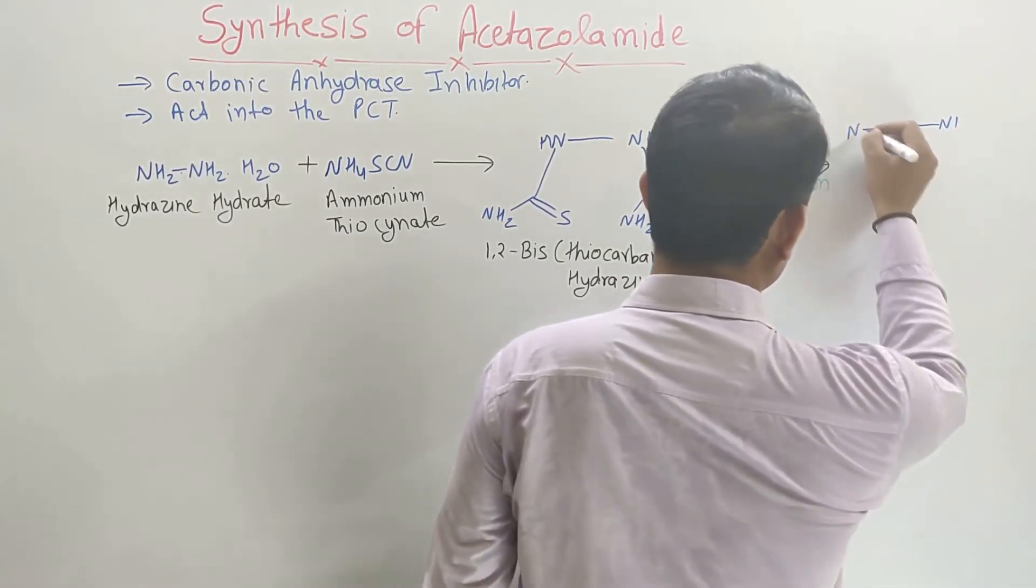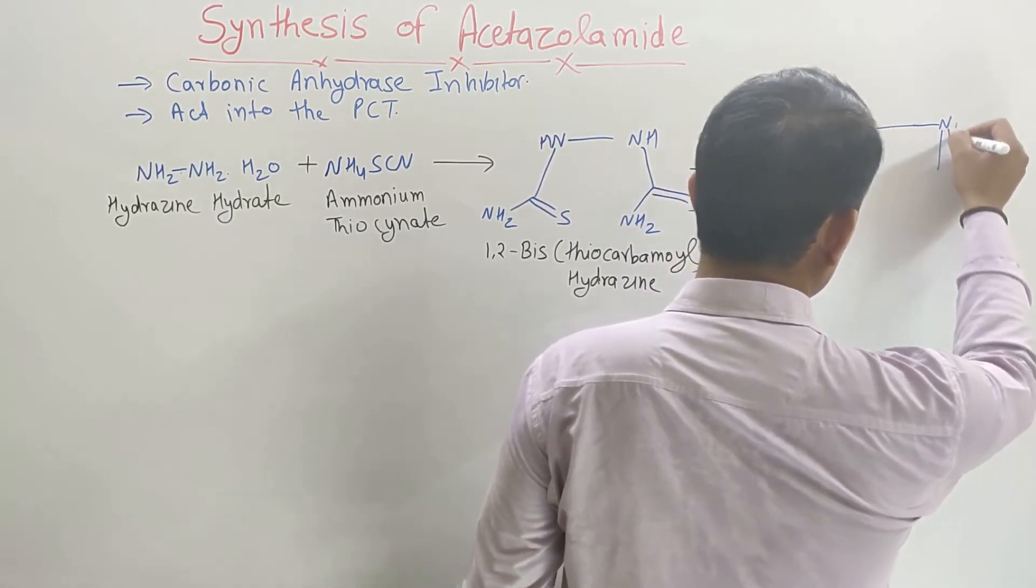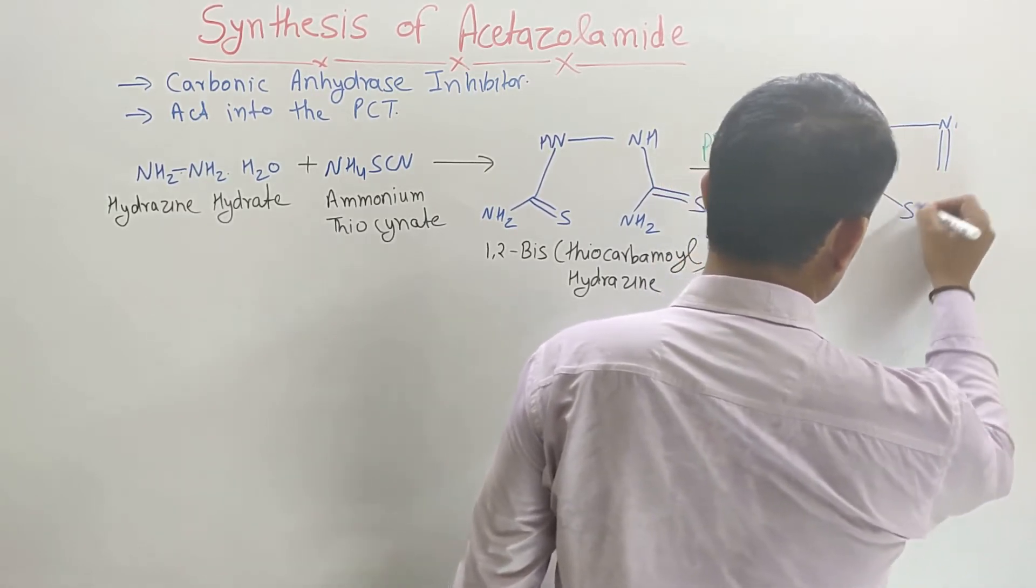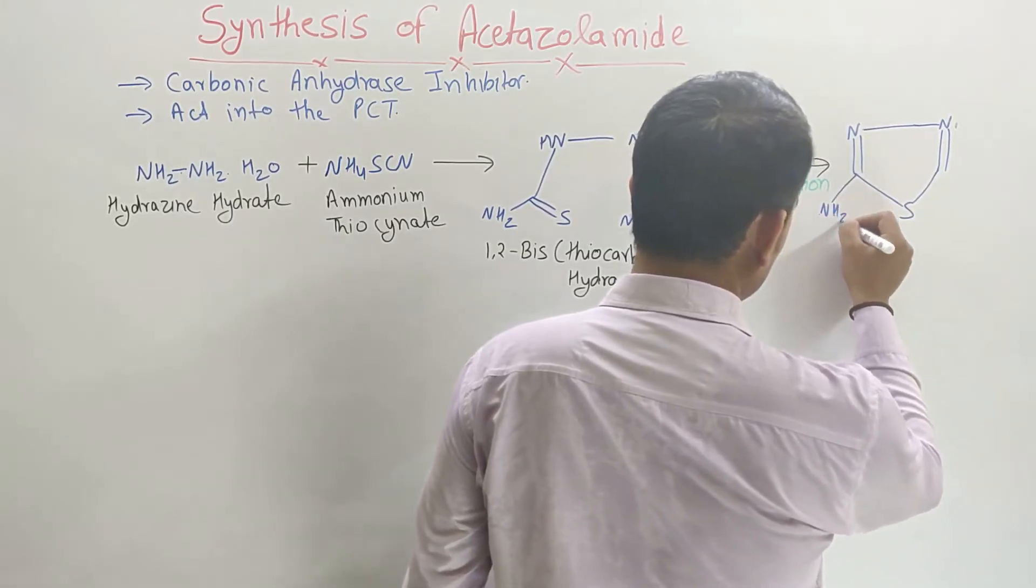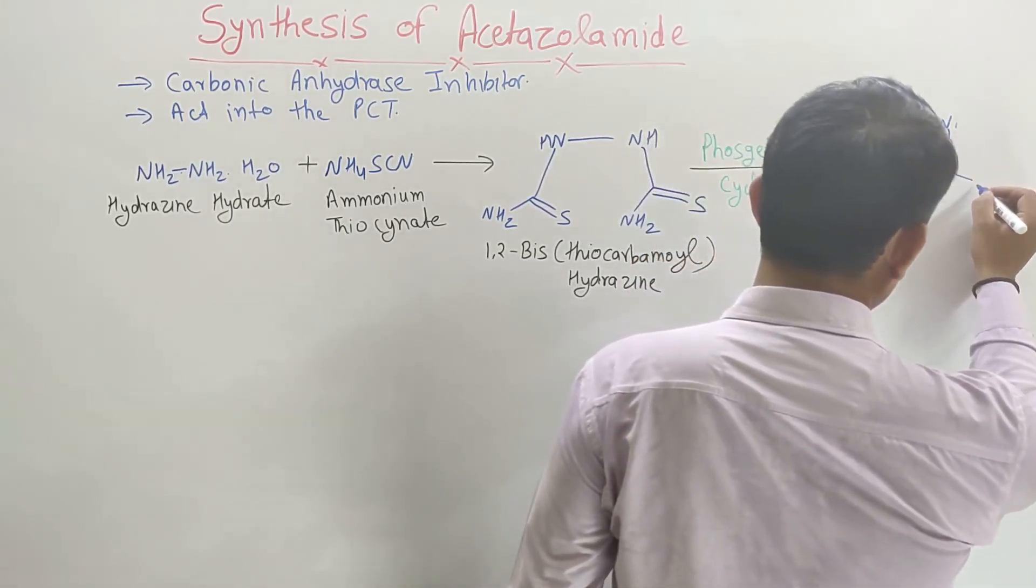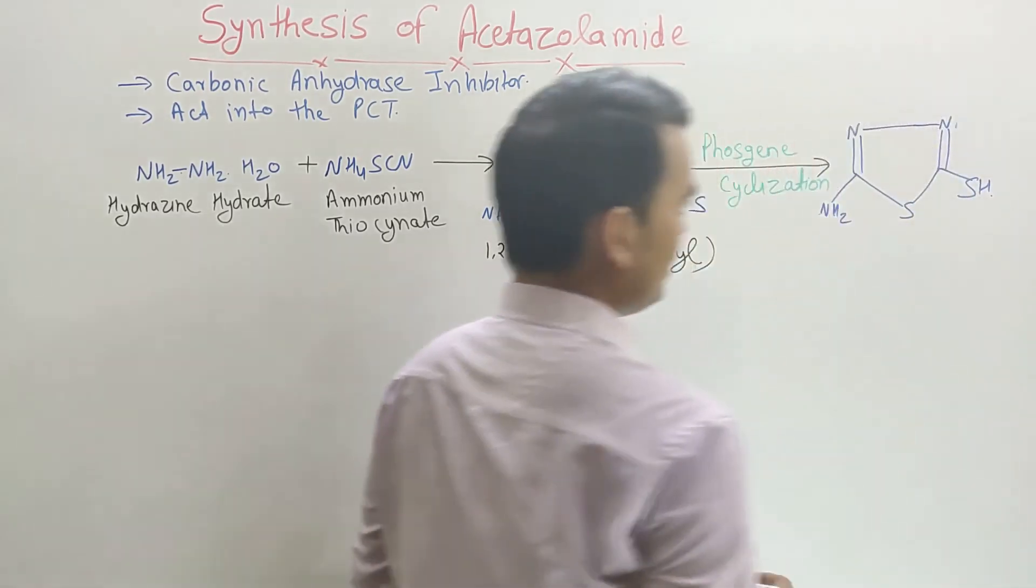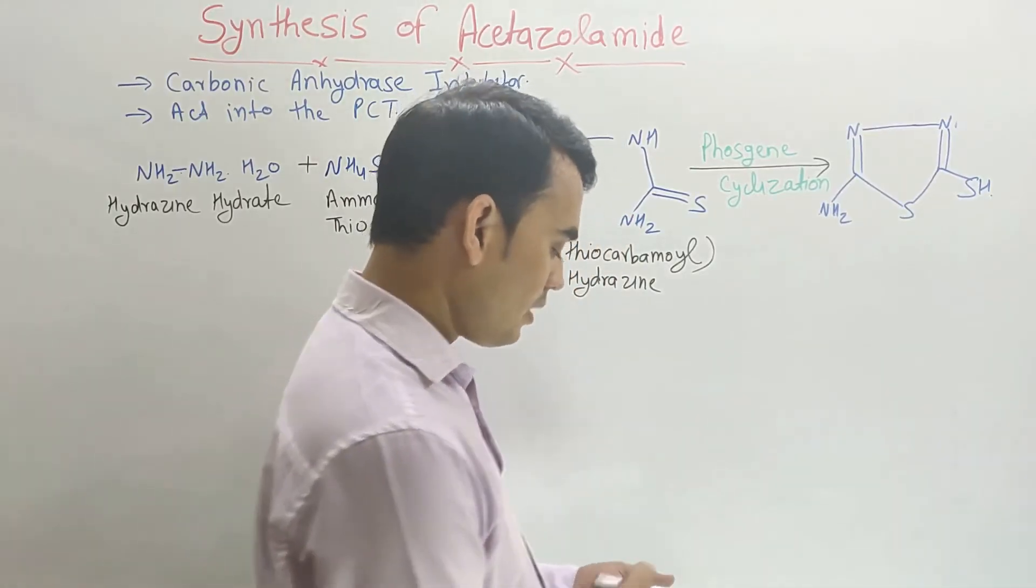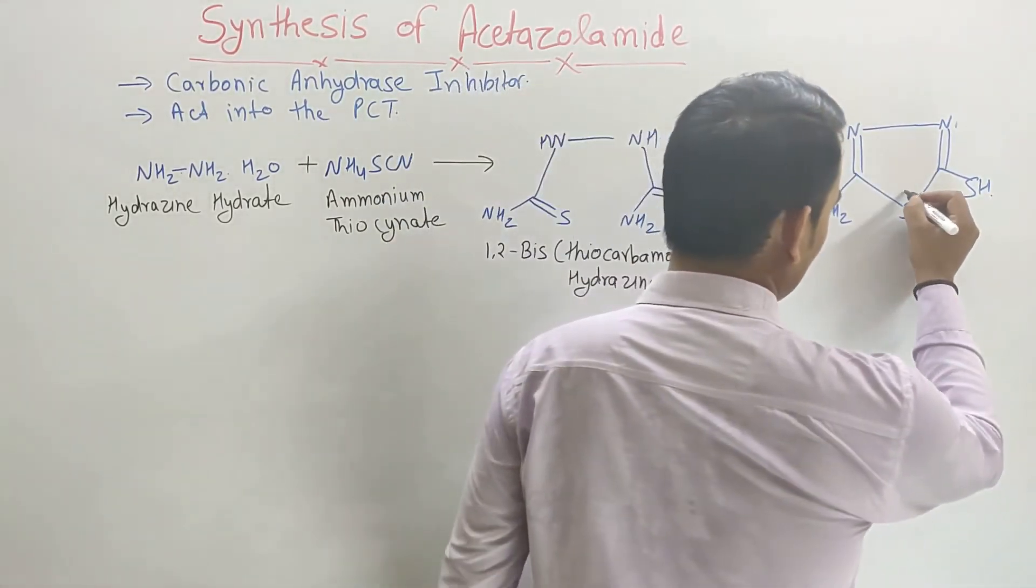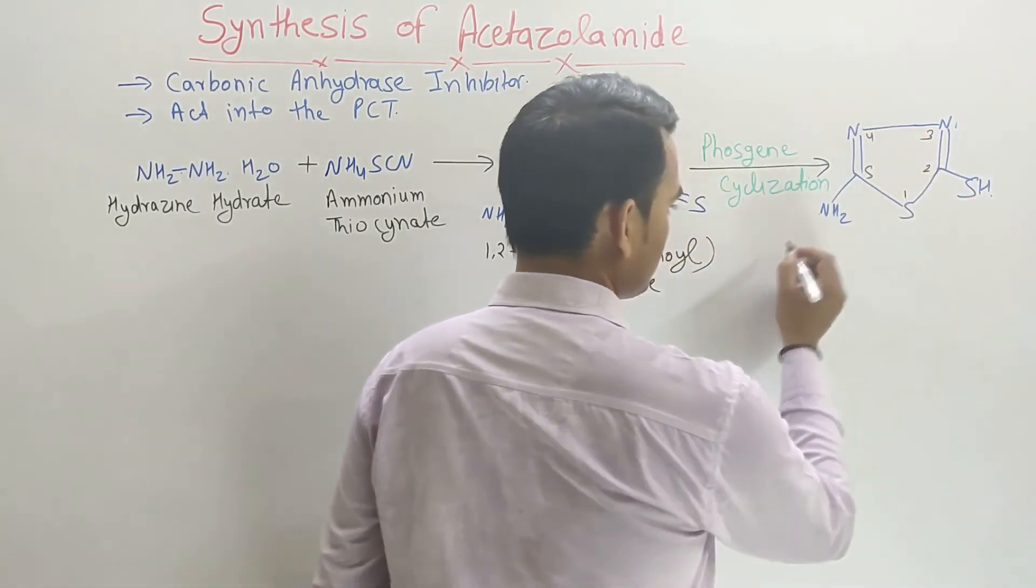A new intermediate forms. The structure has nitrogen, nitrogen, nitrogen, sulfur, and here it has NH2, here it has sulfur and hydrogen. The numbering starts from here: 1, 2, 3, 4, 5.